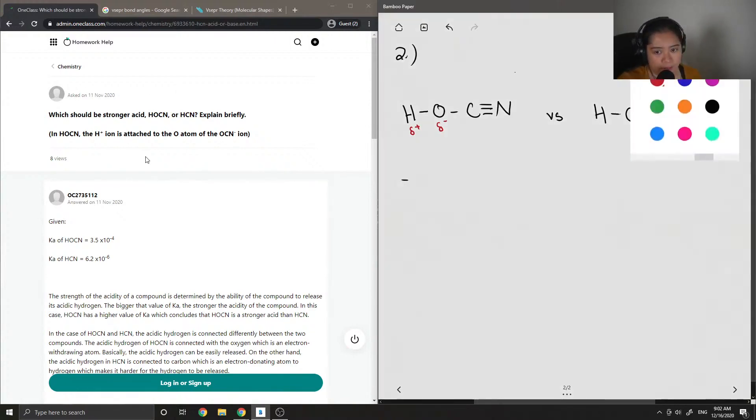So therefore, HOCN is the stronger acid.